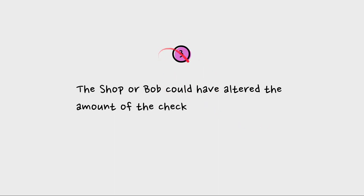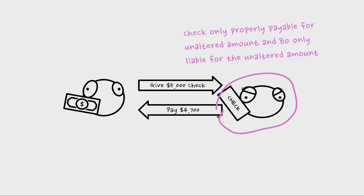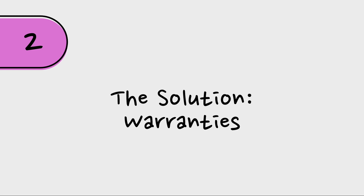If we look at the alteration scenario: part of what makes something properly payable is that it's not altered. If it is altered, it's only payable in its original, unaltered form. So if either Bob or the shop altered the check, it would only be properly payable in the amount Bo authorized when he wrote it — meaning Barb might be way overpaying if it's actually a $50 or $500 check.